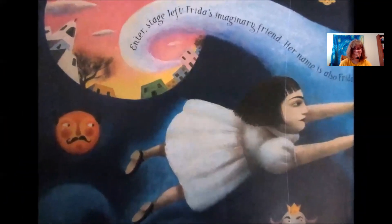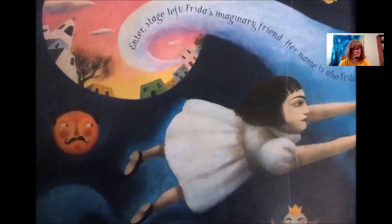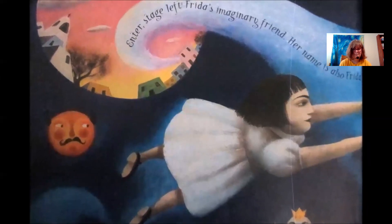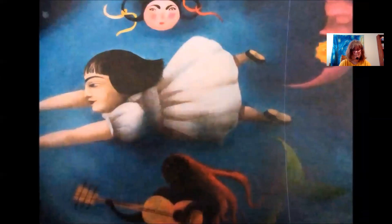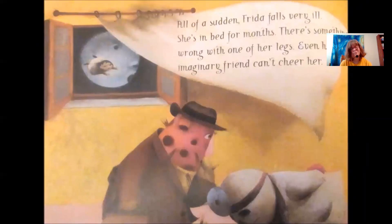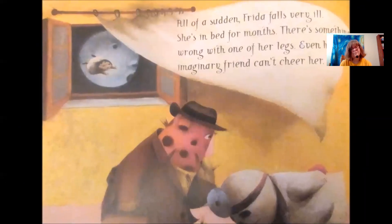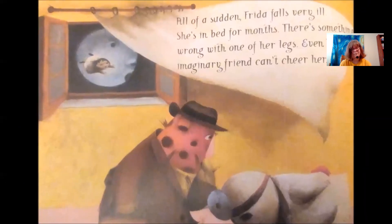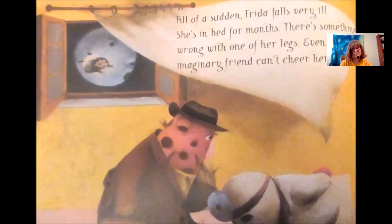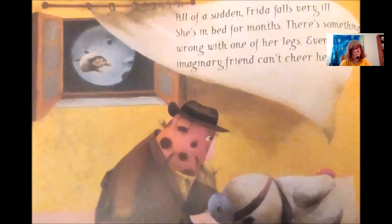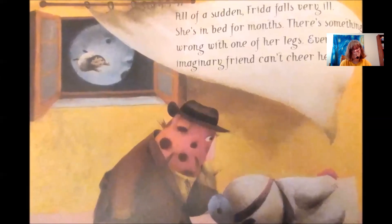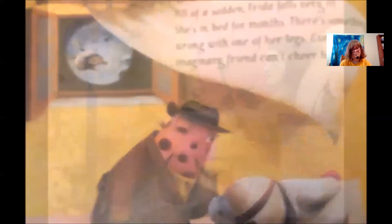Enter stage left: Frida's imaginary friend — her name is also Frida. They play games. All of a sudden, Frida falls very ill. She is in bed for months. There's something wrong with one of her legs. Even her imaginary friend can't help her.